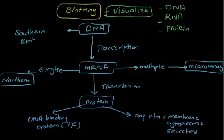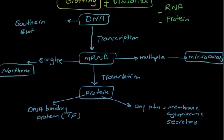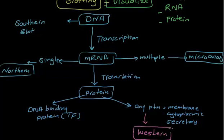If you want to see any type of protein that is not a DNA binding protein, you use Western blot. If you want to see specifically DNA binding protein — which is essentially transcription factors — you use Southwestern blot. So Western blot covers general proteins, and Southwestern blot is specifically for DNA binding proteins.